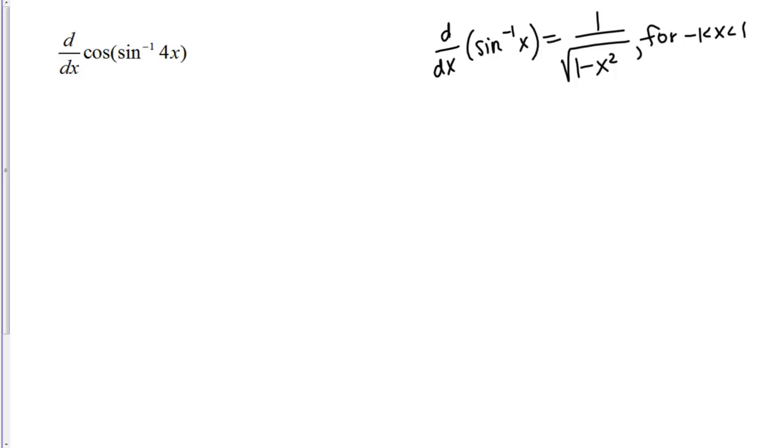Let's use this formula to take the derivative of the expression that we have over here, the cosine of the inverse sine of 4x. This is a nested function here. We're going to have to use the chain rule, and actually we're going to have to use it multiple times.